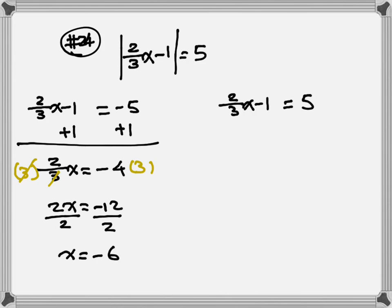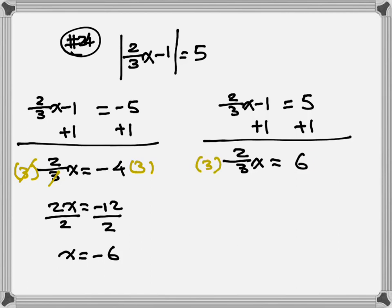Right equation: plus 1 on both sides gives two-thirds x equals 6. Multiply by 3 to clear the denominator — no more fraction — so 2x equals 18. Divide by 2: x equals 9.